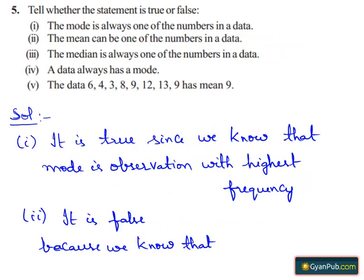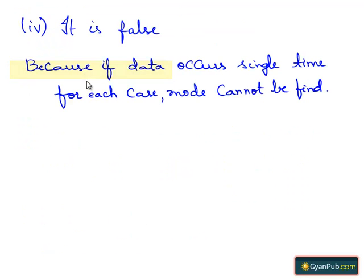Now let us move on to the fourth part. Here they have asked us whether a data always has a mode. The above statement is false because if the data occurs a single time for each case, we cannot find the mode.